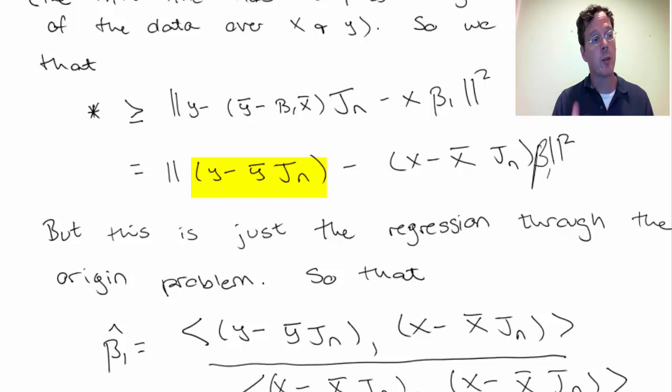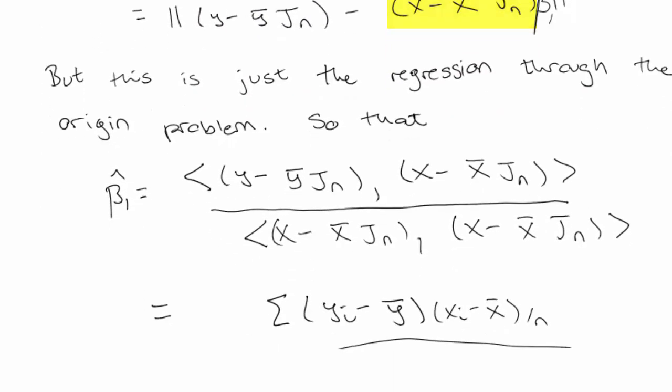Y minus y-bar times jn is exactly centering the y vector and x minus x-bar times jn is exactly centering the x vector. So now we know what the solution has to be. It has to be the inner product between the centered y vector and the centered x vector divided by the inner product of the centered x vector by itself now.